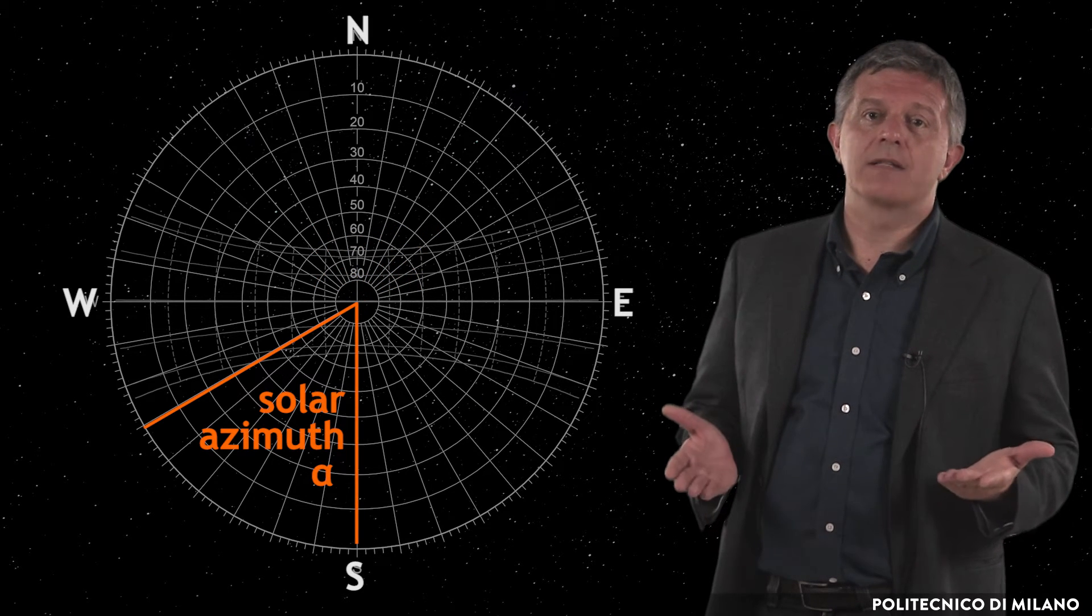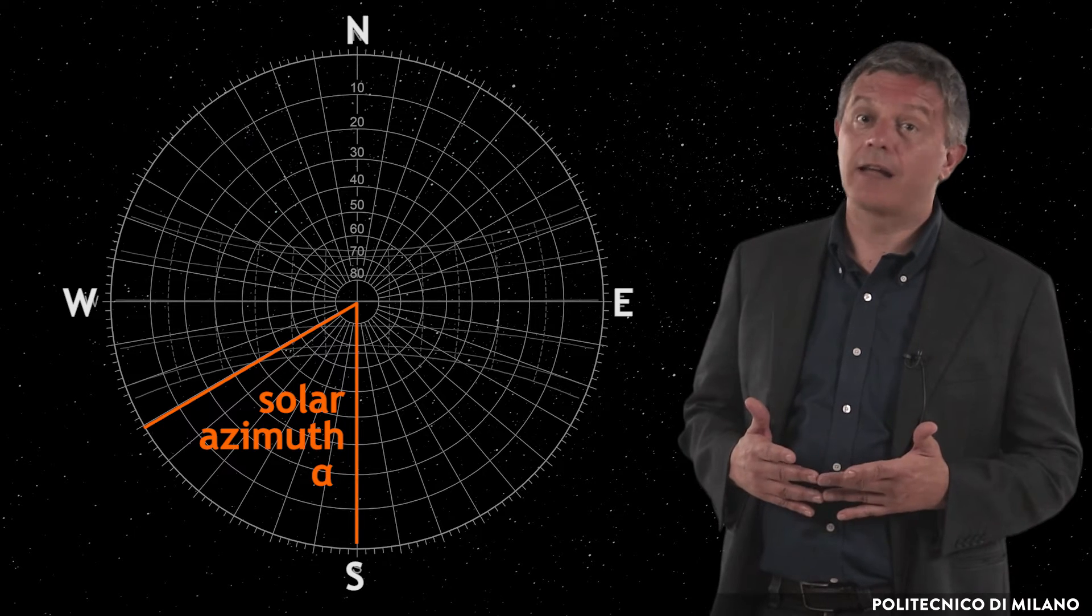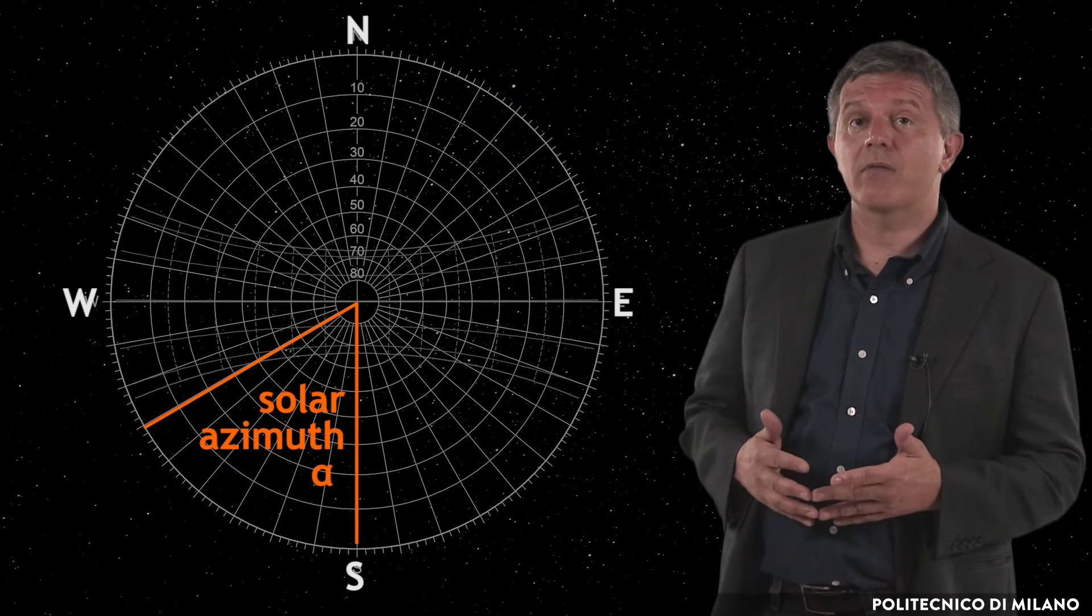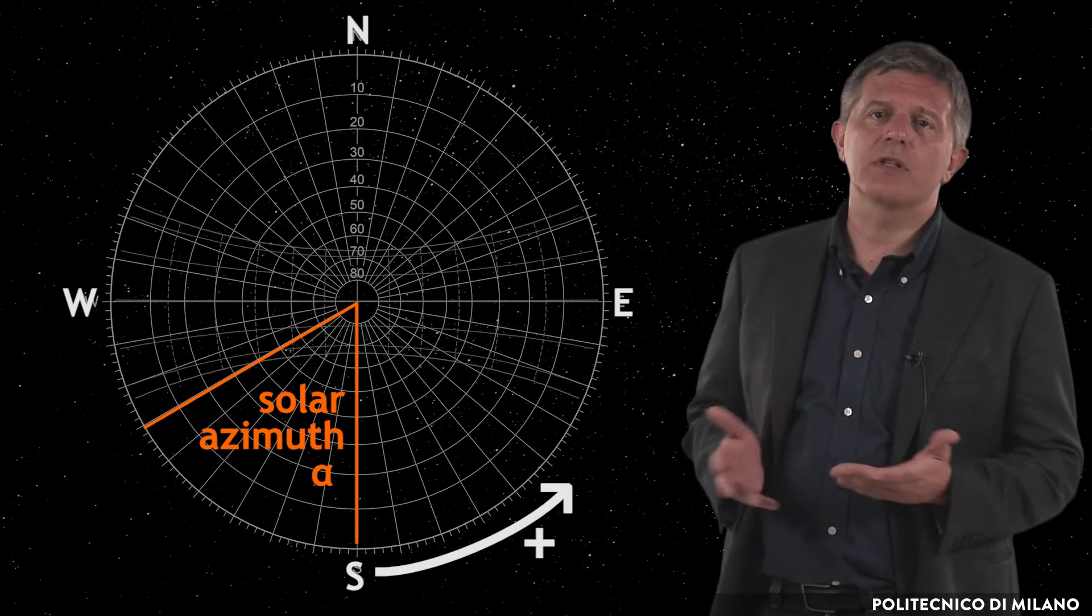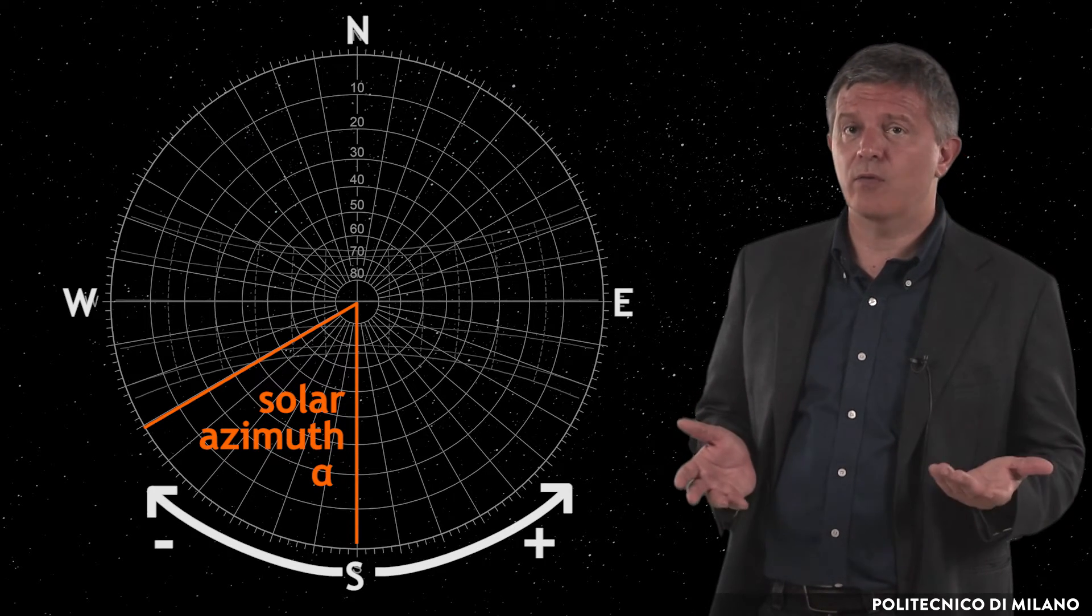The values of solar azimuth alpha are indicated by the radial lines and can be read out as the angular distance from the south pointing coordinate axis with positive values eastward and negative westward.